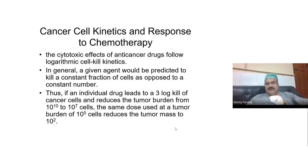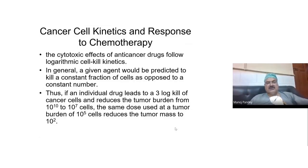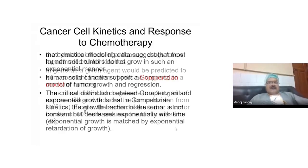Every time a drug is given, this logarithmic kill — though not universal for all drugs — is generalized for drugs which act independent of the cell cycle. So if a drug acts independent of the cell cycle or acts in all phases, you will usually get logarithmic cell kinetics. But if it is cell-cycle specific, then the cell kill will depend upon the number of cells present in that particular phase.